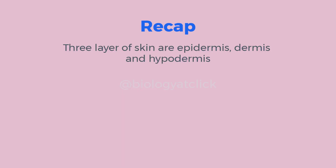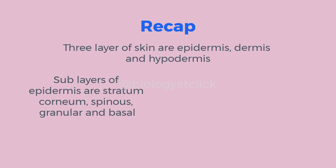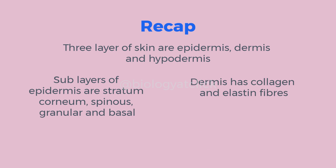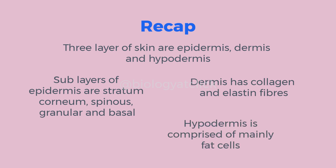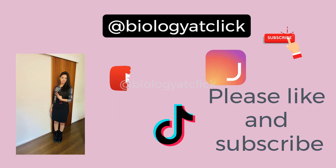In summary, the skin is composed of three layers: outer epidermis, middle dermis, and inner hypodermis. The epidermis is subdivided into stratum corneum, spinous, granular, and basal layers. The dermis has two important fibers — collagen and elastin — and the hypodermis is composed of fat cells. I hope this video was helpful. Please like and subscribe to the channel for more biology learning, and comment if you need any help with textbook questions. Keep learning with Biology at Click. Take care!